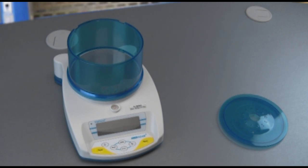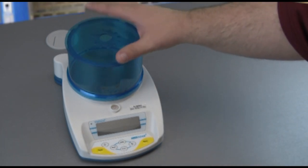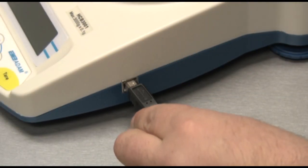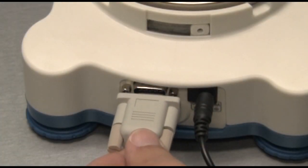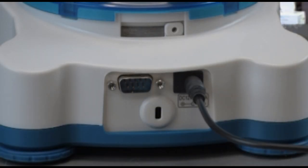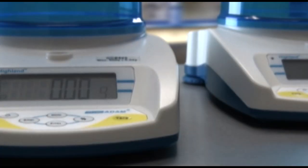The Highland is equipped with other features such as a removable draft shield to reduce errors from air currents, a weigh below hook for density or specific gravity determinations, USB and RS-232 interfaces for data collection and printer connection, and a built-in rechargeable battery that allows the balance to operate without a power source.